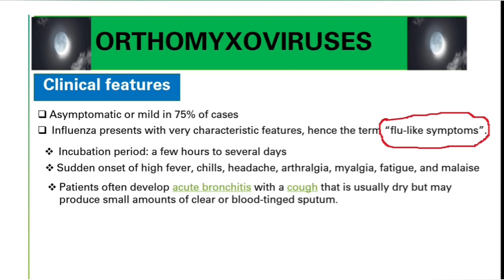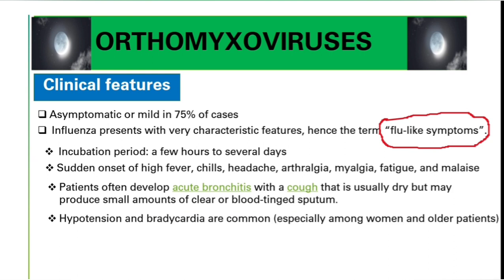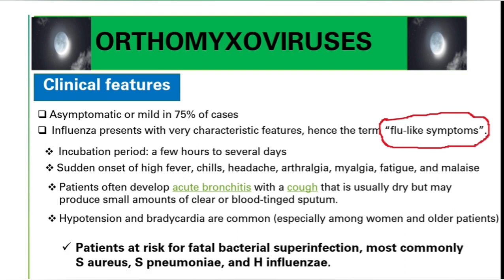Some patients develop acute bronchitis with a cough that is usually dry but can produce small amounts of clear or blood-tinged sputum. Among women and older patients, hypotension and bradycardia are common. Importantly, patients are at risk of superinfection, mostly by Staphylococcus aureus, Streptococcus pneumoniae, and Haemophilus influenzae.